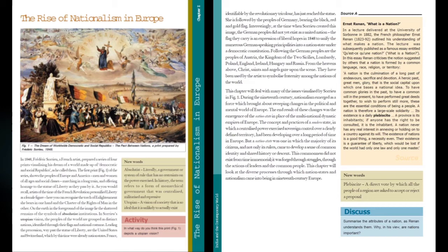The common identity of people in Europe was not present from time immemorial. It was forged through struggles, through revolutionary activities, and through the actions of leaders and common people. This chapter will look at the diverse processes through which nation-states and nationalism came into being in 19th century Europe.